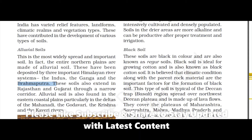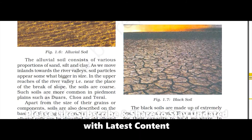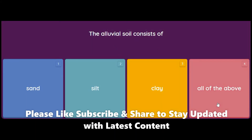These soils also extend in Rajasthan and Gujarat through a narrow corridor. Alluvial soil is also found in the eastern coastal plains, particularly in the deltas of the Mahanadi, the Godavari, the Krishna, and the Kaveri rivers. The alluvial soil consists of various proportions of sand, silt and clay — so the answer is all of the above.